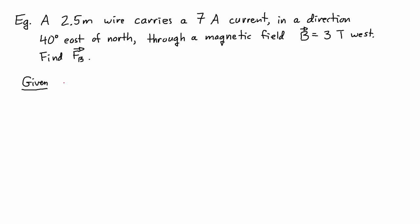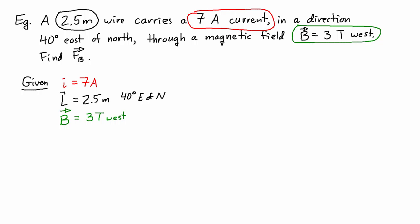We're given that the current is 7 amps. We're also given that the wire is 2.5 meters long. And we're given the magnetic field as being 3 teslas to the west. We're also given the direction of the L vector as 40 degrees east of north.